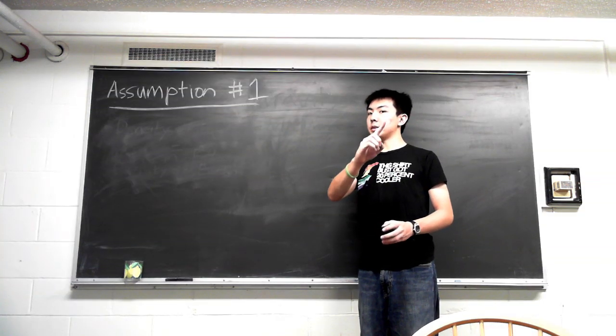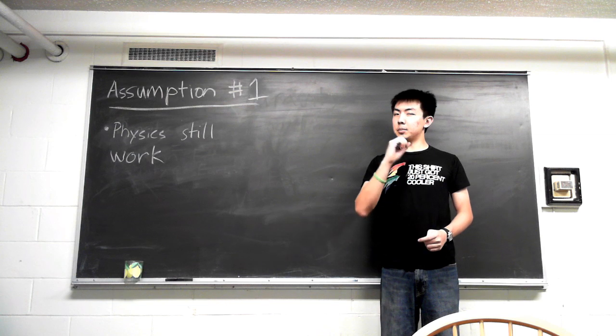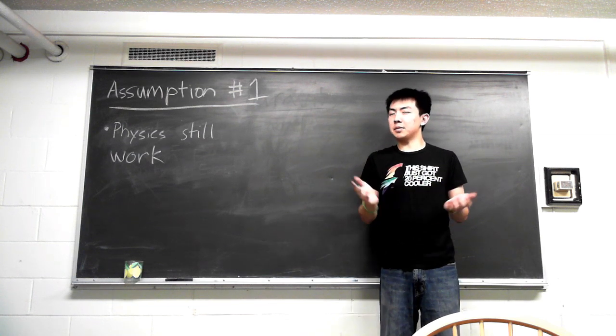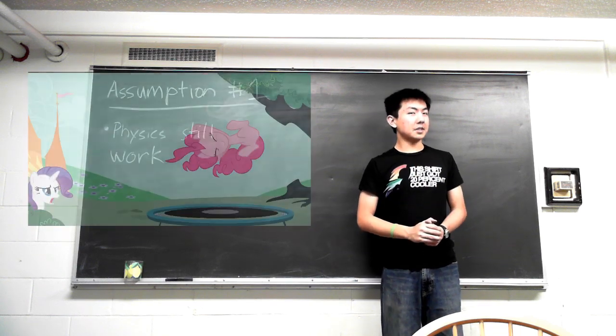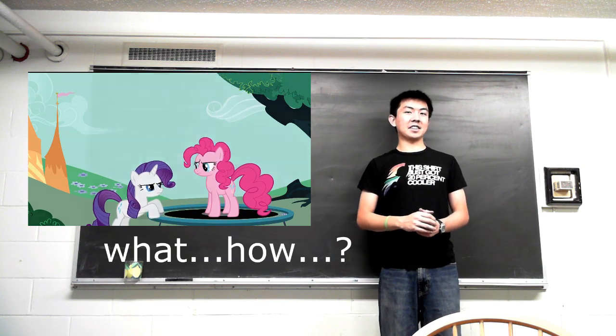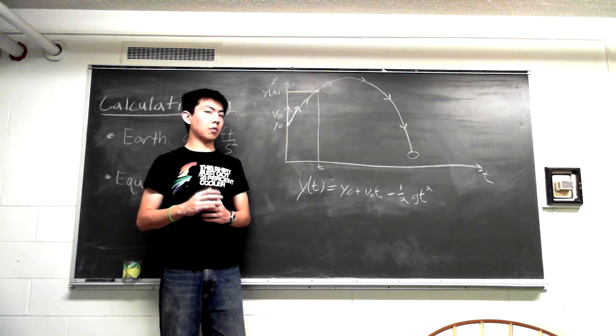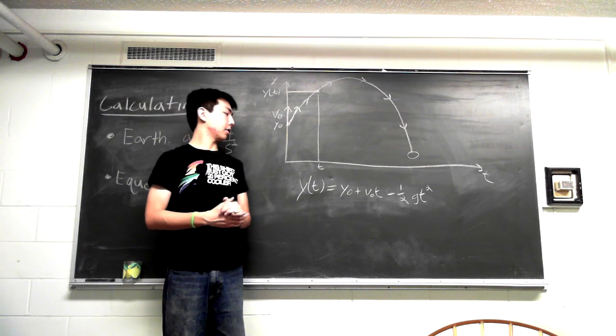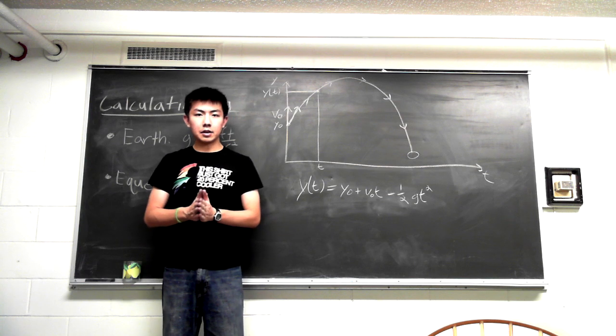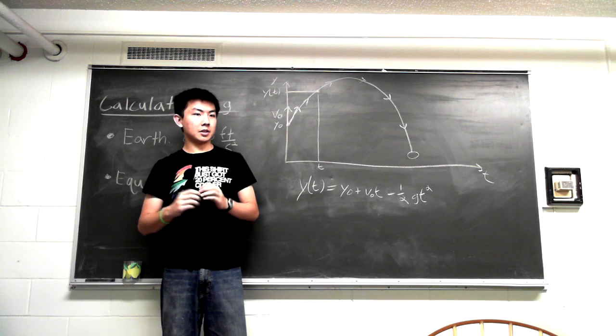Assumption number one: Newtonian physics still apply in Equestria. Now, this assumption might seem a little obvious or mundane, but if you've ever seen Pinkie Pie in action, you know this assumption is quite necessary. So, we can take this equation and apply it to situations in Equestria. If for those situations we can find the values of Y(T), Y0, V0, and T, we can then calculate the value of G. Are you ready? Here we go!